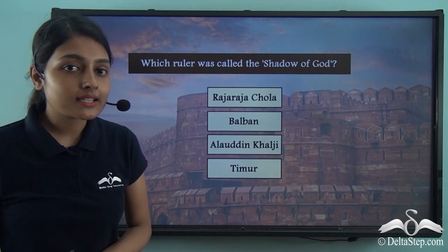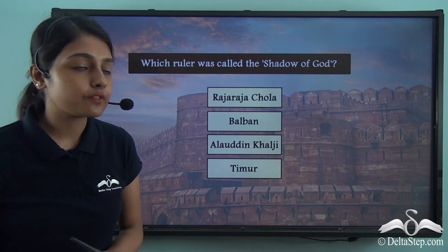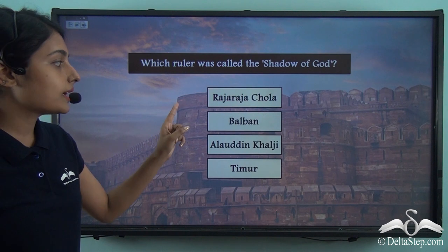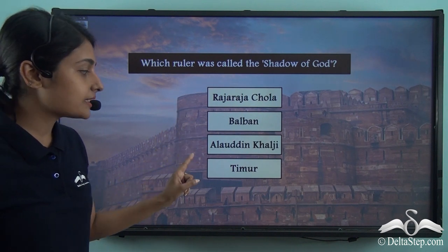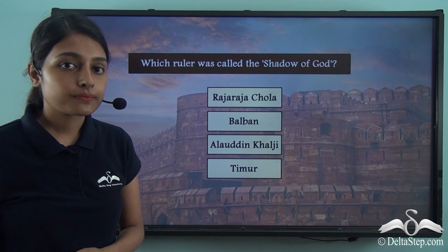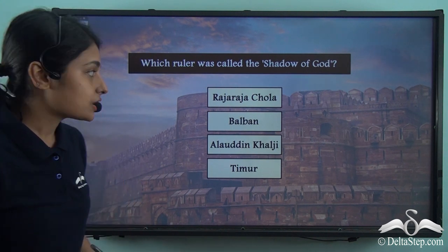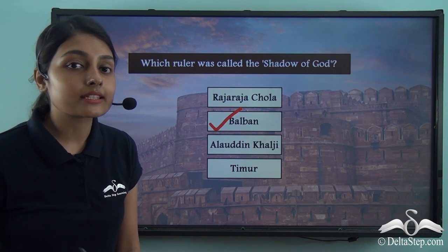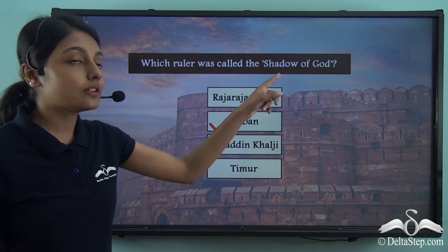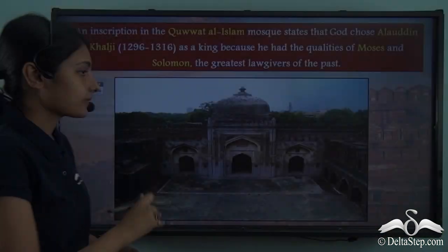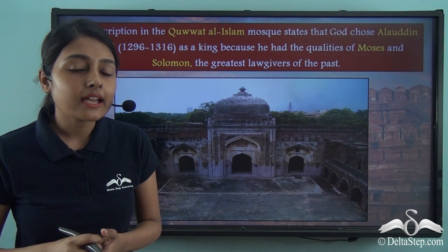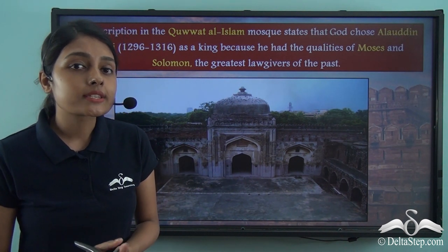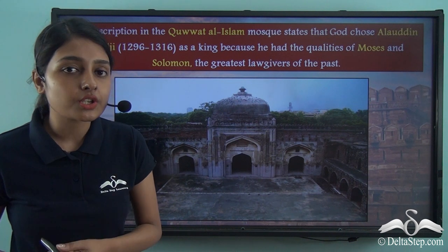Which ruler was called the shadow of god? It was Balban, and we know this from Persian chronicles that describe Balban as the shadow of god. This desire to portray oneself as equivalent to god was not exclusive to King Raja Raja Deva or Balban.